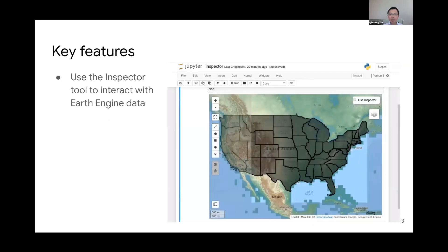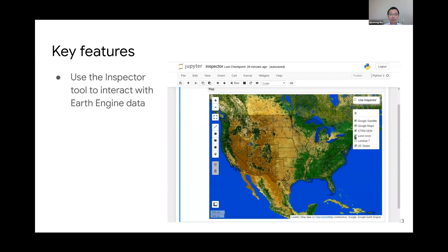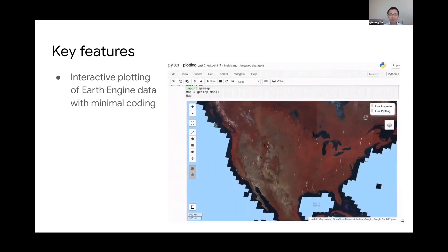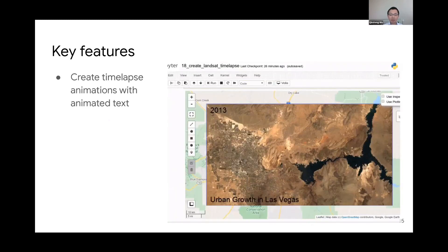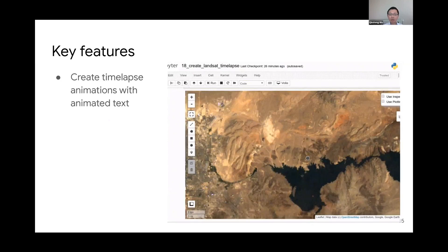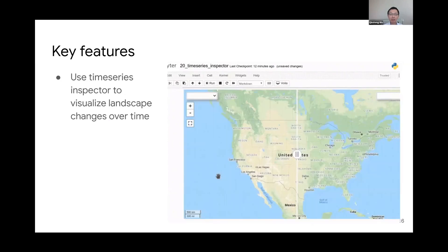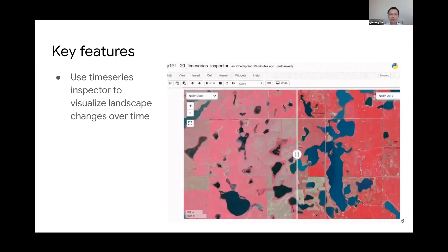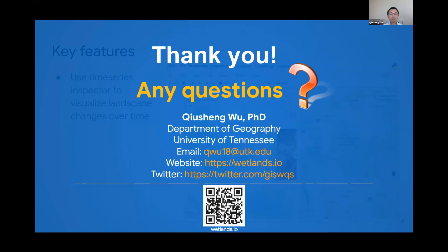You can use the inspector tool to click and get all the information, similar to the code editor. You can also do interactive plotting — just click and get a graph for all the data layers. You can create animations just by drawing a rectangle, with no extra coding required. Lastly, you can do a split panel map to visualize changes across all kinds of layers — only a few lines of code, much easier than JavaScript.